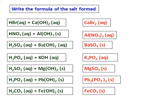For example, potassium phosphate — all potassium salts are soluble, so it is aqueous. Lead salts are all insoluble except nitrates, acetates, and chlorates, so lead phosphite is a solid. Similarly, barium sulfate, magnesium sulfite, and iron carbonate are all solid salts, while the rest are aqueous.